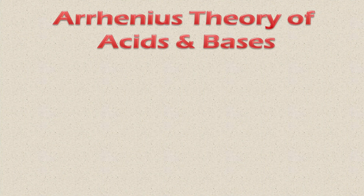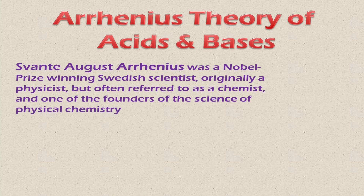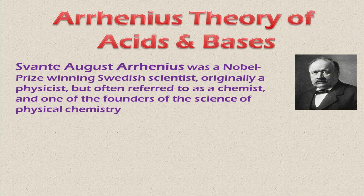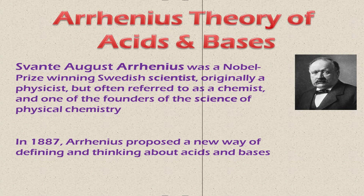Now we will discuss some proper definitions of acids and bases. Svante Arrhenius was a Nobel Prize-winning Swedish scientist, originally a physicist but often referred to as a chemist, and one of the founders of the science of physical chemistry. He was the first to give a theory regarding acids and bases. In 1887, Arrhenius proposed a new way of defining and thinking about acids and bases.